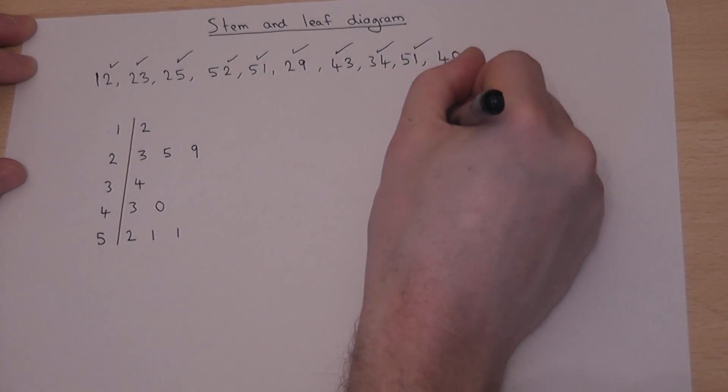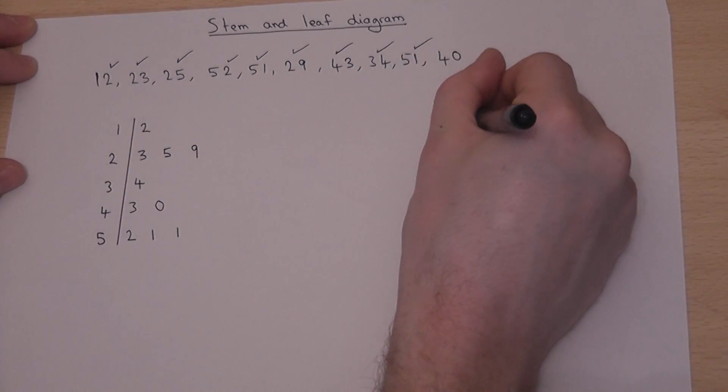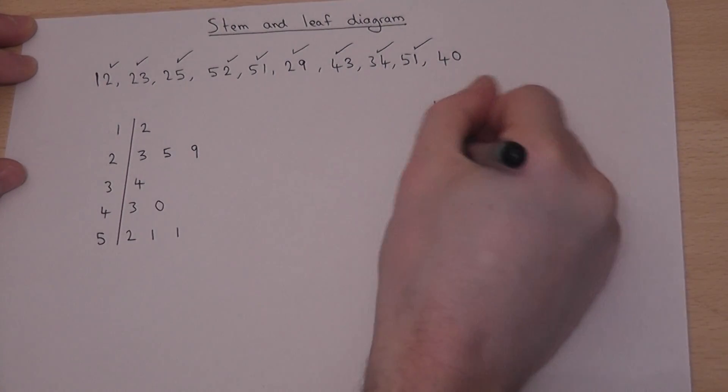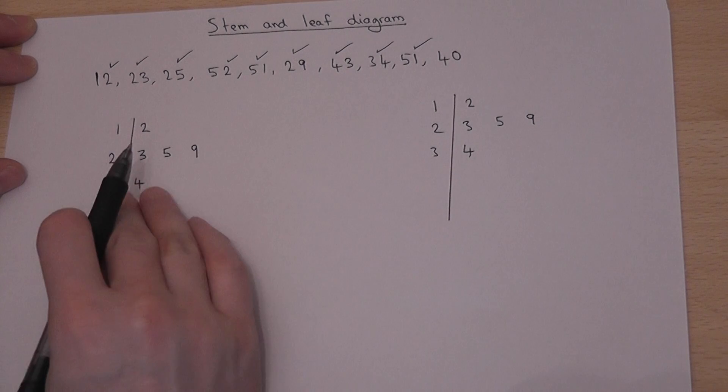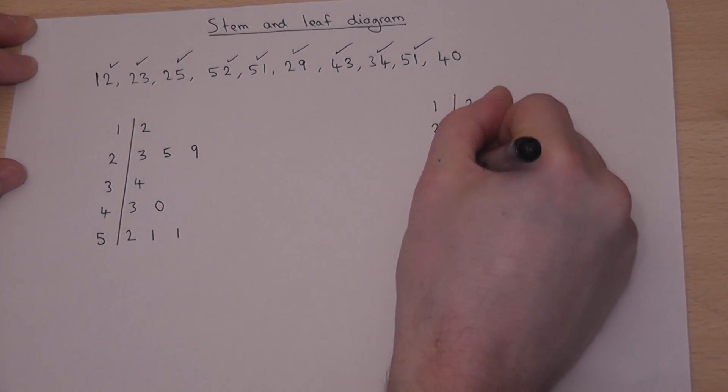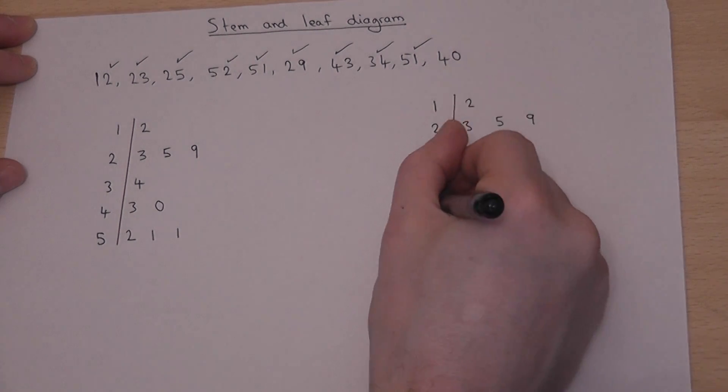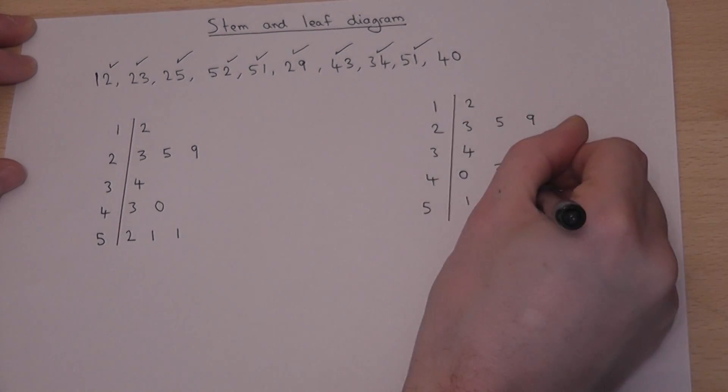That's ordered. This one, 3, 5, 9, already is ordered. Then 34, that's OK. 43 and 40, I can swap those numbers around to make it ordered. And then 211, make it ordered: 1, 1, 2.